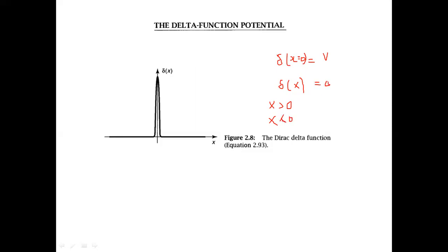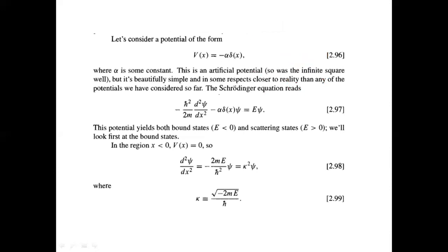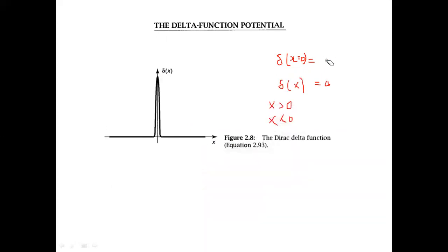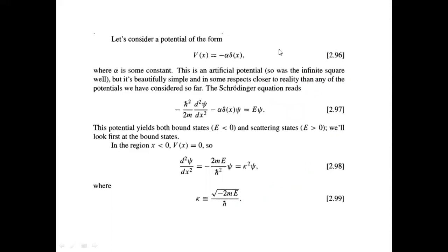We take V(x) in this form: it is a Dirac delta function where the value at x equal to zero is one, and the constant alpha represents the height of the potential. When x is not equal to zero the value becomes zero. This function describes the height of the potential at the origin.